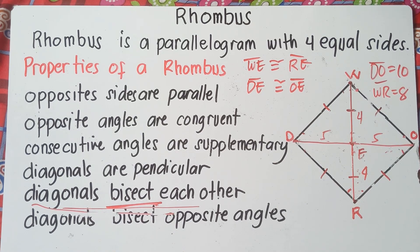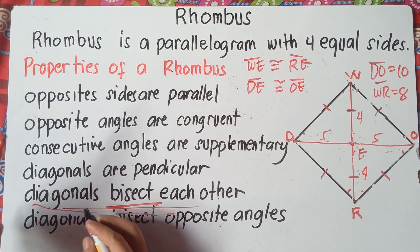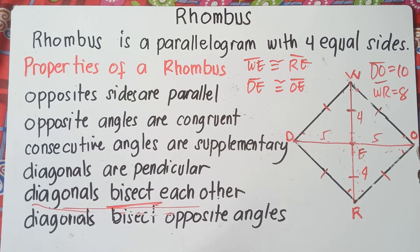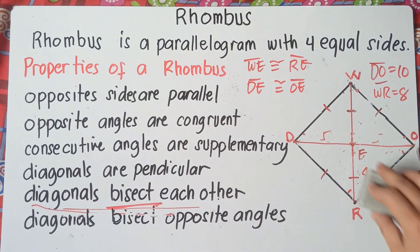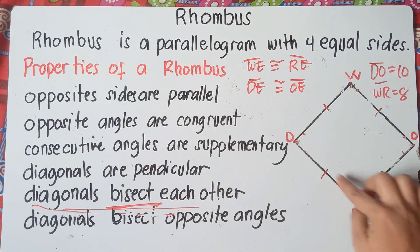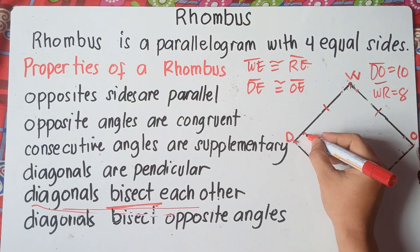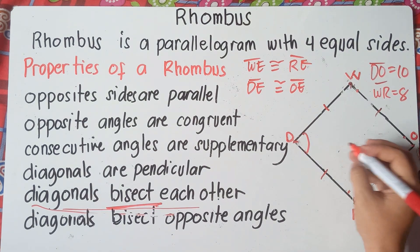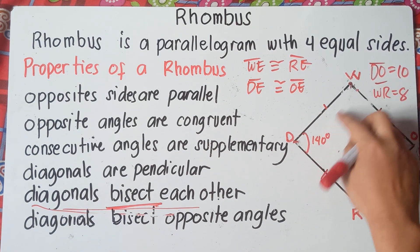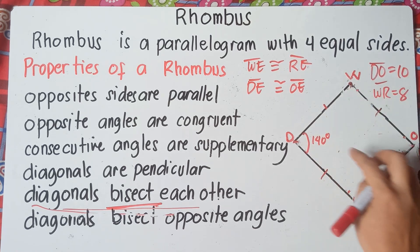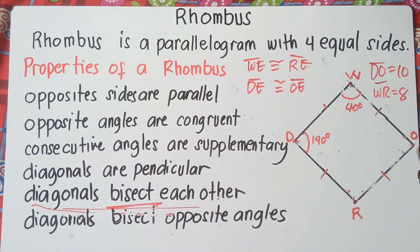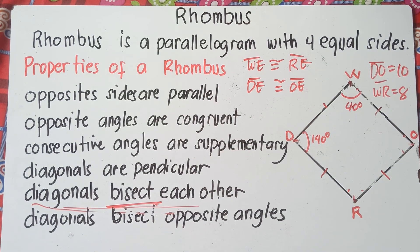The last property: diagonals bisect opposite angles. So if angle D is 140 degrees, then consecutive angle W should be 40 degrees, because 140 plus 40 equals 180. Since D and O are opposite angles, angle O must also be 140 degrees. When we draw diagonal DO, bisect means they cut the angles into two equal parts.